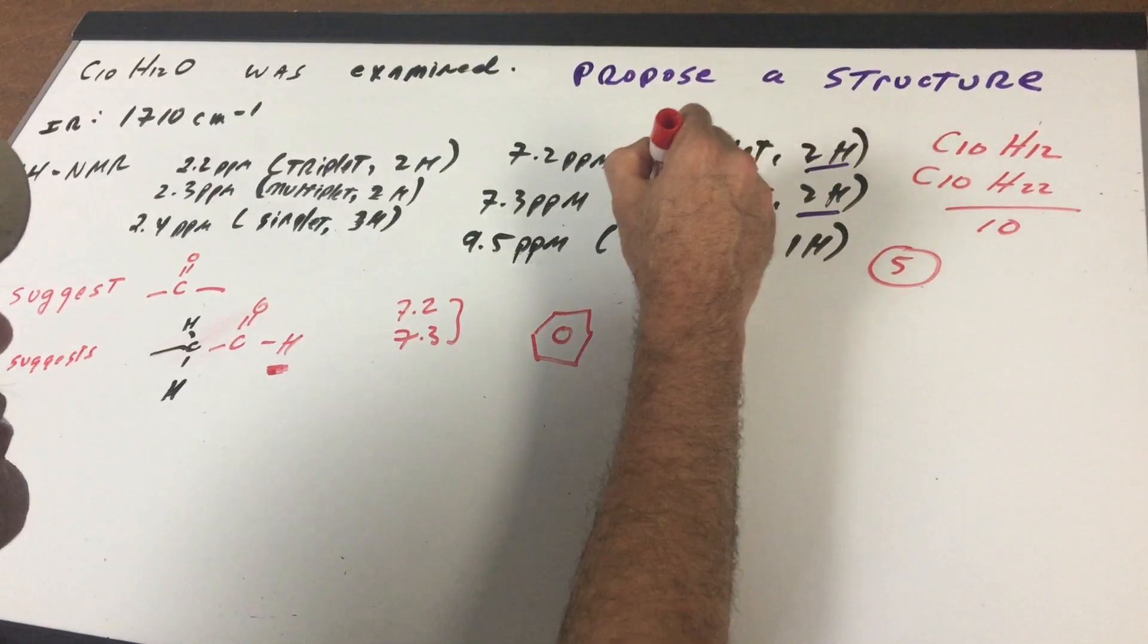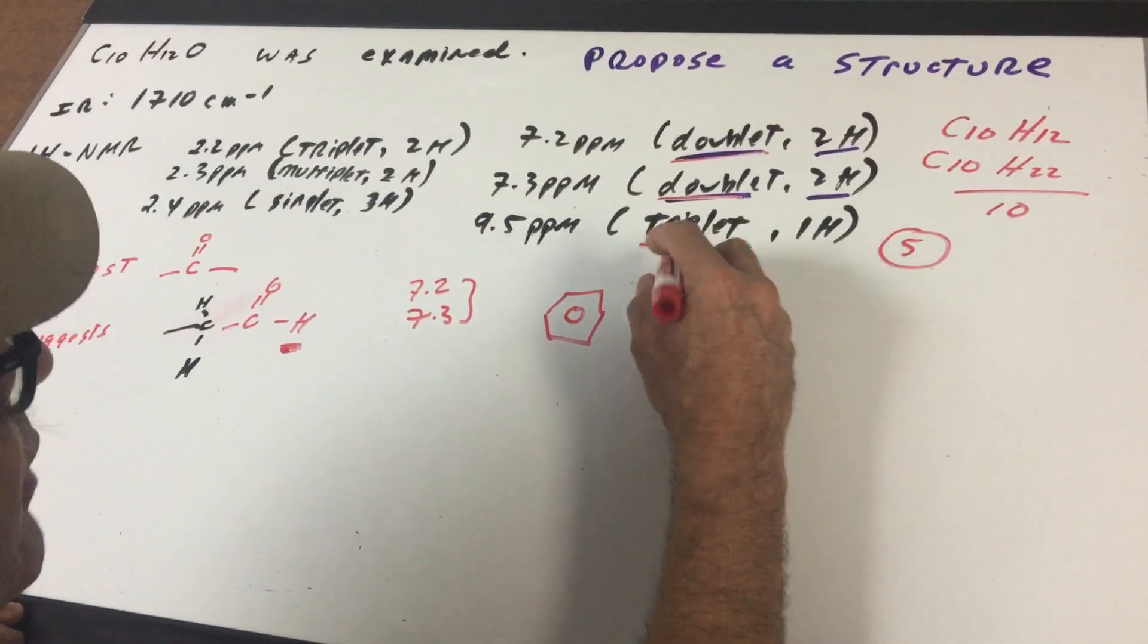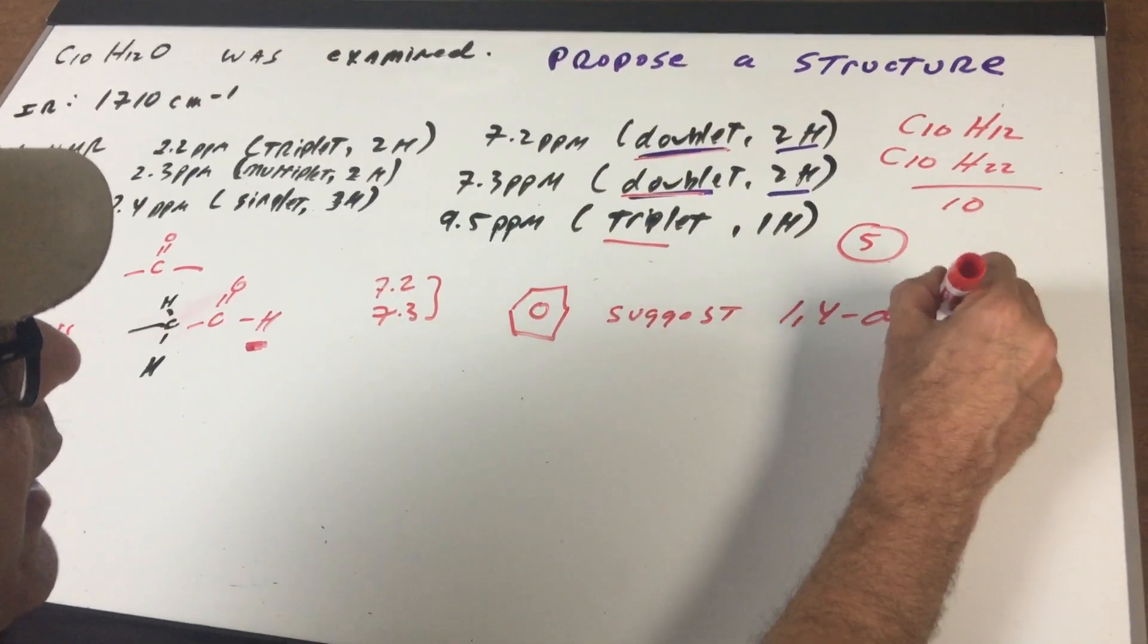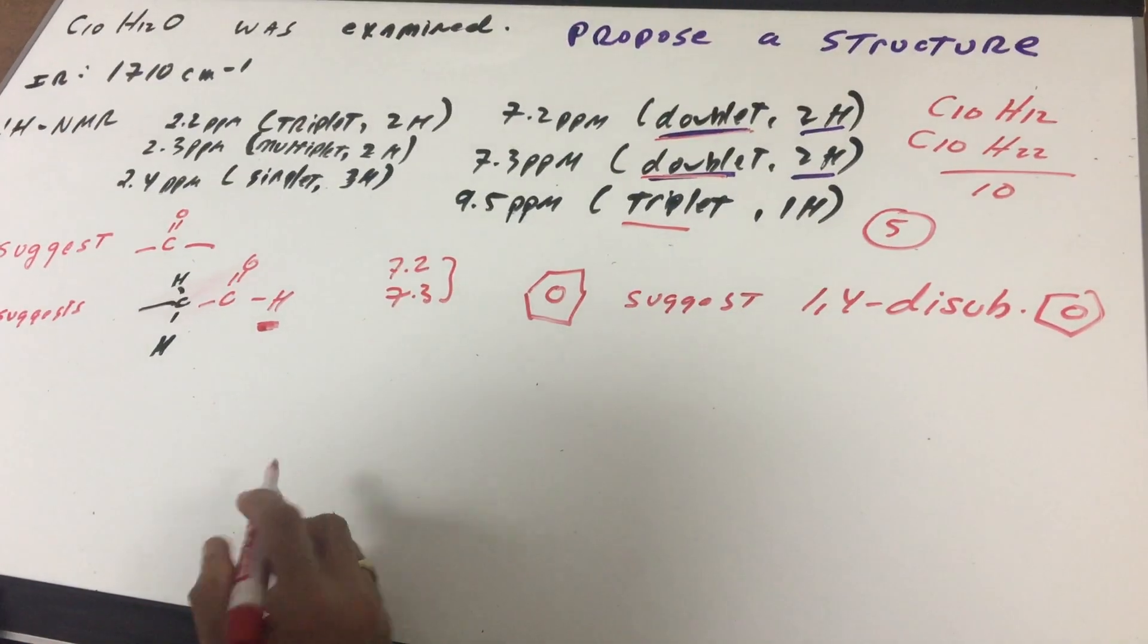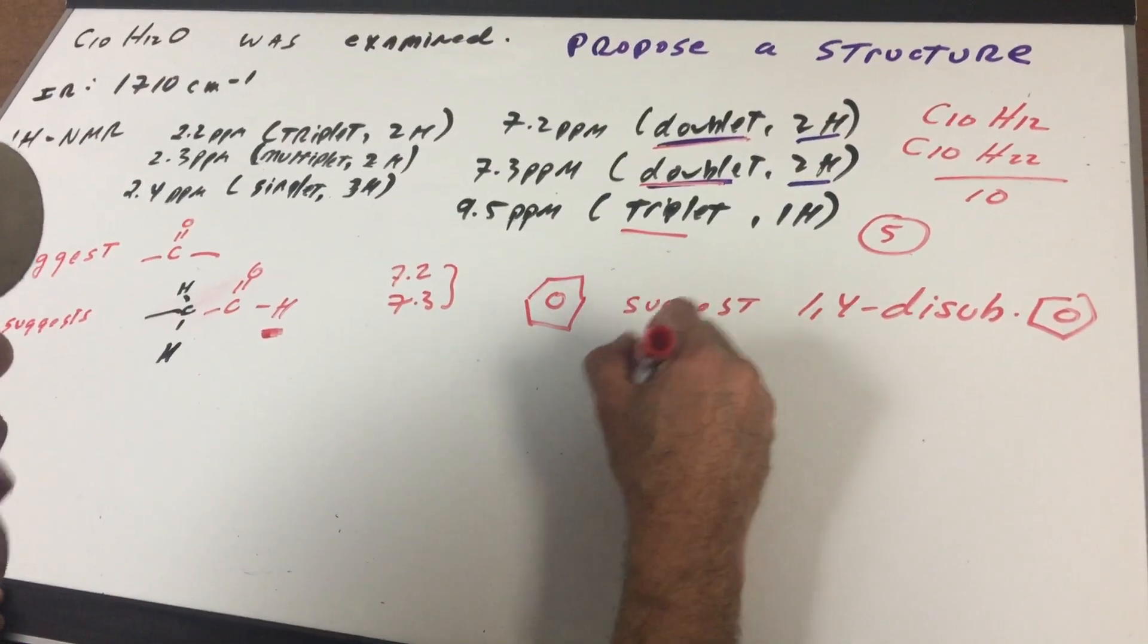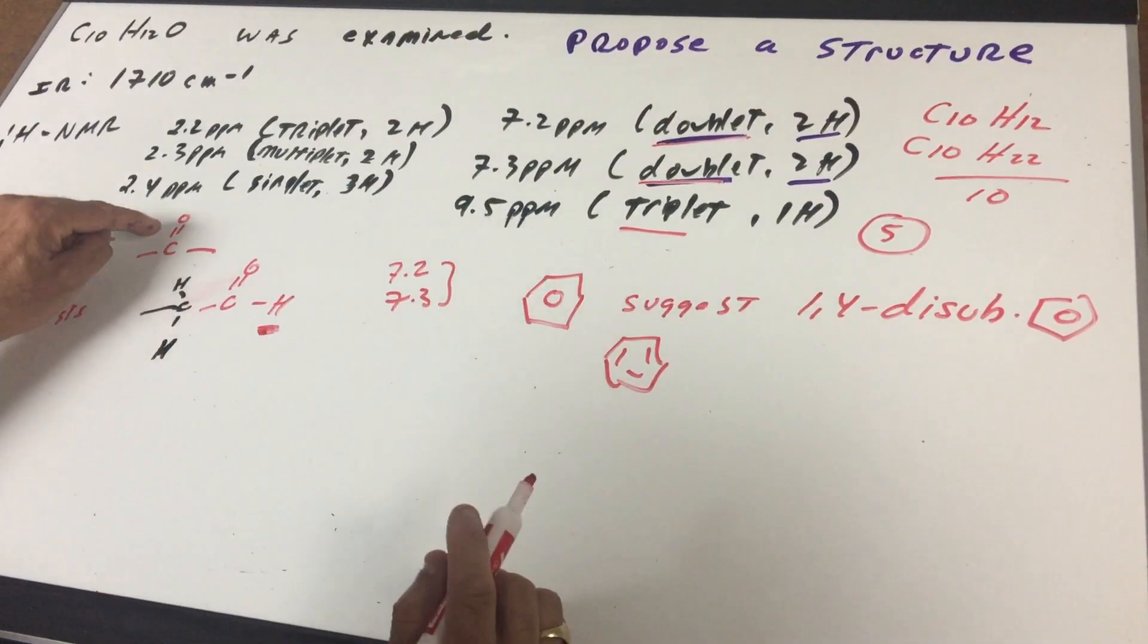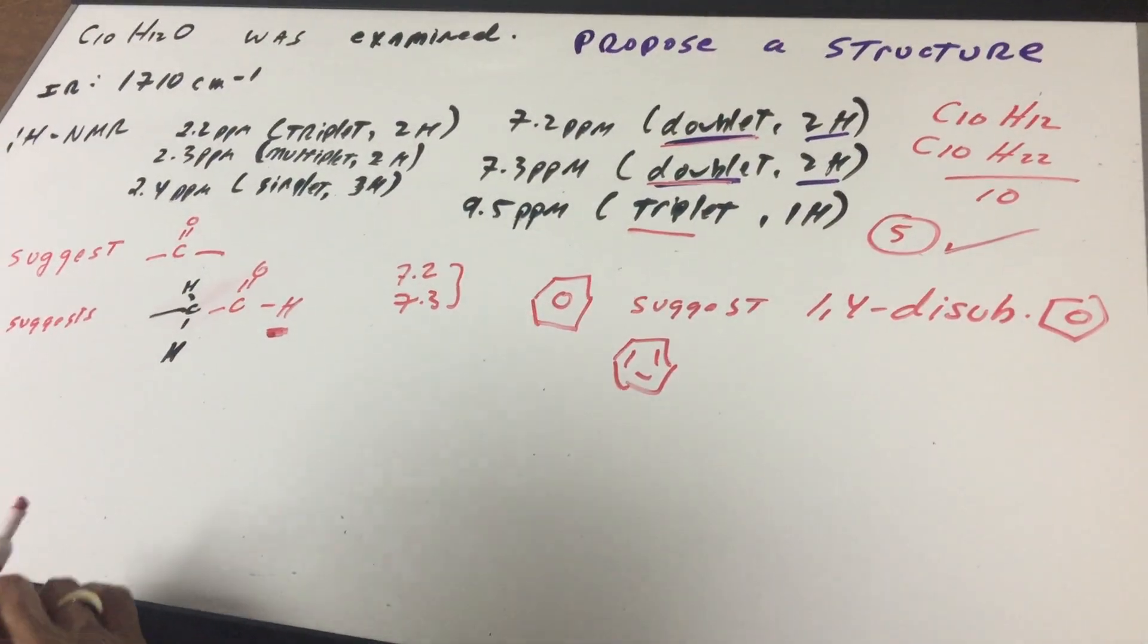When I see anything around 7, that's gonna suggest a benzene ring. Now whenever you see a doublet and a doublet, two doublets at around 7, that's gonna suggest a 1,4 di-substituted benzene ring. Well if there's a benzene ring present, a benzene ring as you guys know looks like this. So that means that there's a ring and three double bonds, there's four degrees, and then there's a carbonyl, that would confirm the five degrees of unsaturation.